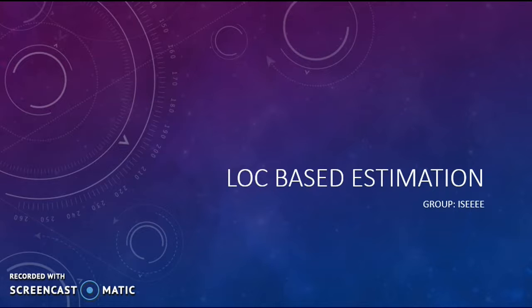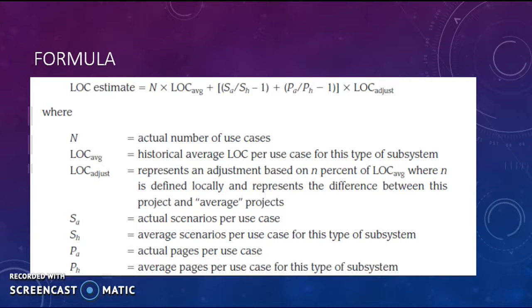Before doing the estimation of software sizing, we have to consider the type of project, the application domain, and the functionality delivery. We have to do a bounded statement of scope into problem functions that can each be estimated individually. This productivity matrix is then applied to the appropriate estimation variables. Thus, the greater the degree of partitioning, the more reasonably accurate it is.